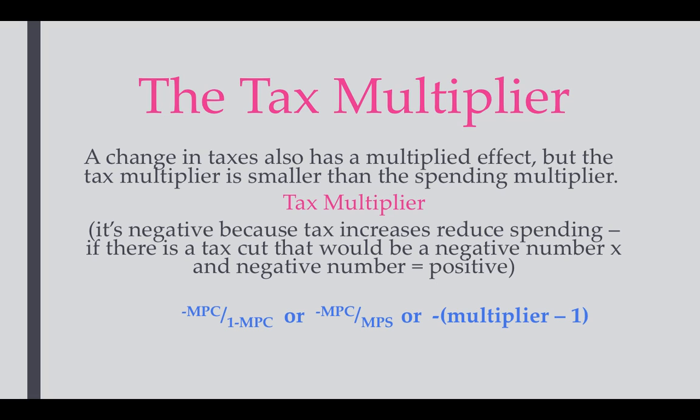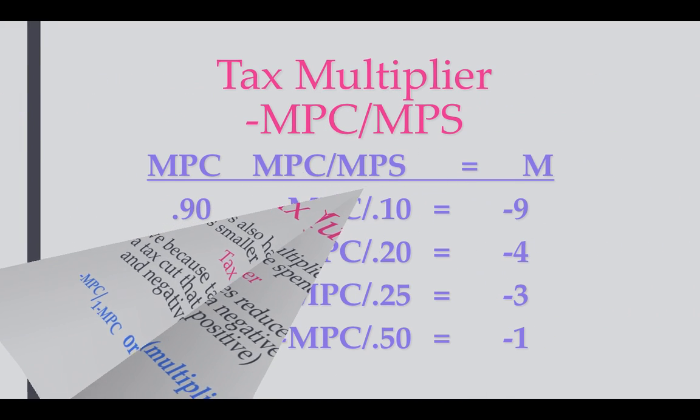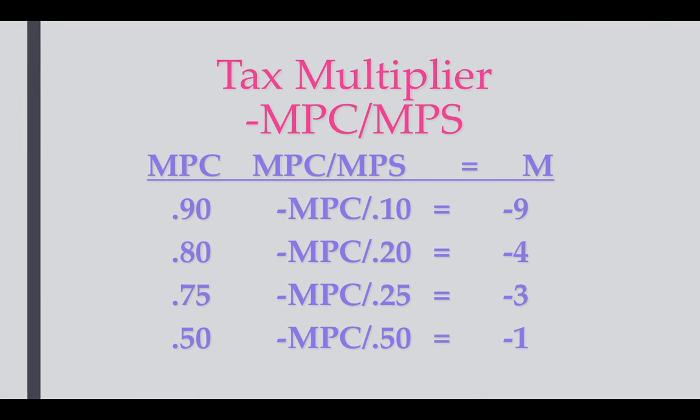That last formula is easy to use: take the spending multiplier — say it's 10 — subtract 1, then put a negative sign in front, giving a tax multiplier of negative 9. Any of the three formulas will work; use whichever you're comfortable with. Comparing the tax multipliers to the spending multipliers in the chart, you'll see each tax multiplier is one less than the corresponding spending multiplier.